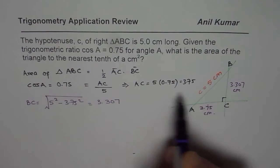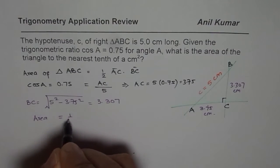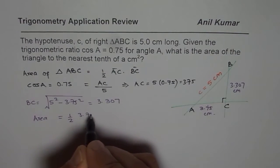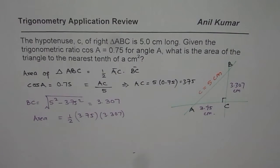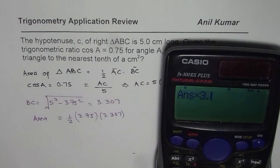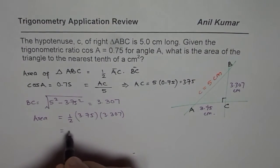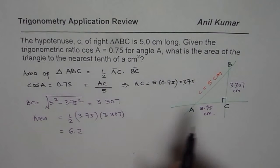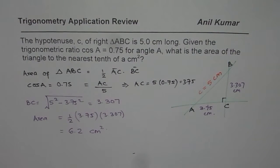Now we can substitute these values and say area is equal to half of AC which is 3.75 times 3.307. Let's use the calculator. That equals in decimals 6.2. So that gives us the answer 6.2 centimeters squared. So that is the area of this particular triangle.